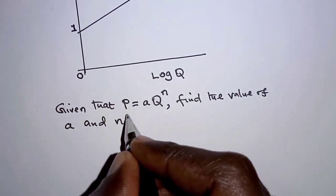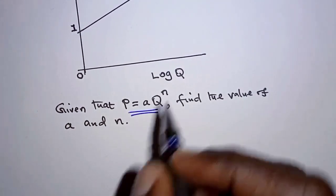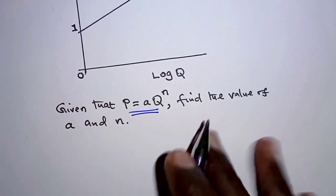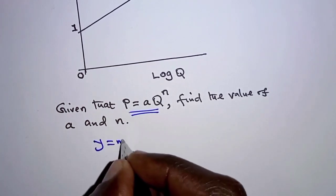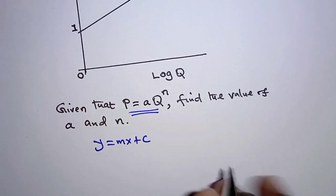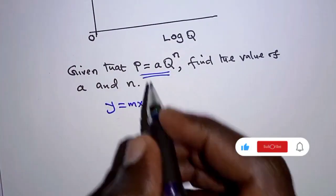So we reduce this nonlinear law to linear form that is in the form Y is equal to MX plus C. So how is that achieved?